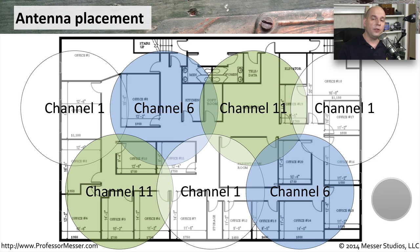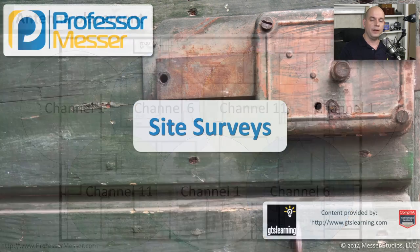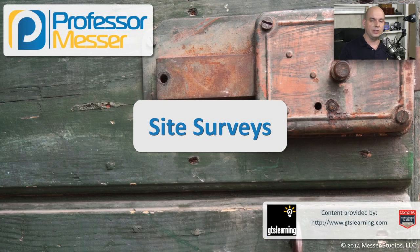Notice that we've interlaced them so that no Channel 1 is ever going to conflict with another Channel 1, Channel 6 would not conflict with another Channel 6, and Channel 11 would not conflict with another Channel 11. You have other frequencies and channel choices depending on the wireless type you'll be using, but you'll want to use the same type of methodology so that when you implement your wireless network, you're not going to have any problems with interference with the signal.